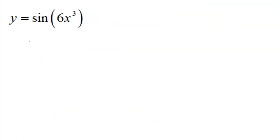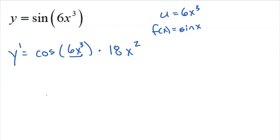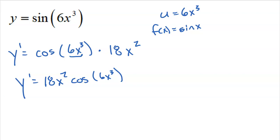Next one: u is 6x cubed, inside the original function sine of x. The chain rule says take the derivative of sine of x, which is cosine, but leave the inside alone. So cosine of 6x cubed, and then multiply by the derivative of the inside: 3 falls down, multiplies by 6 to get 18x squared. The final answer is 18x squared times cosine of 6x cubed.